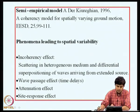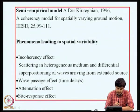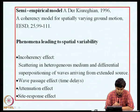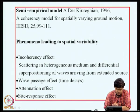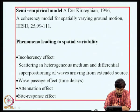I will discuss a semi-empirical model proposed by Durk-Kurigen. He considers four sources of phenomena that lead to spatial variability. According to him, the first effect is known as the incoherency effect, caused by scattering in a heterogeneous medium and differential superposition of waves arriving from an extended source. The next ones are the wave passage effect, which causes time delays, the attenuation effect, and the site response effect.